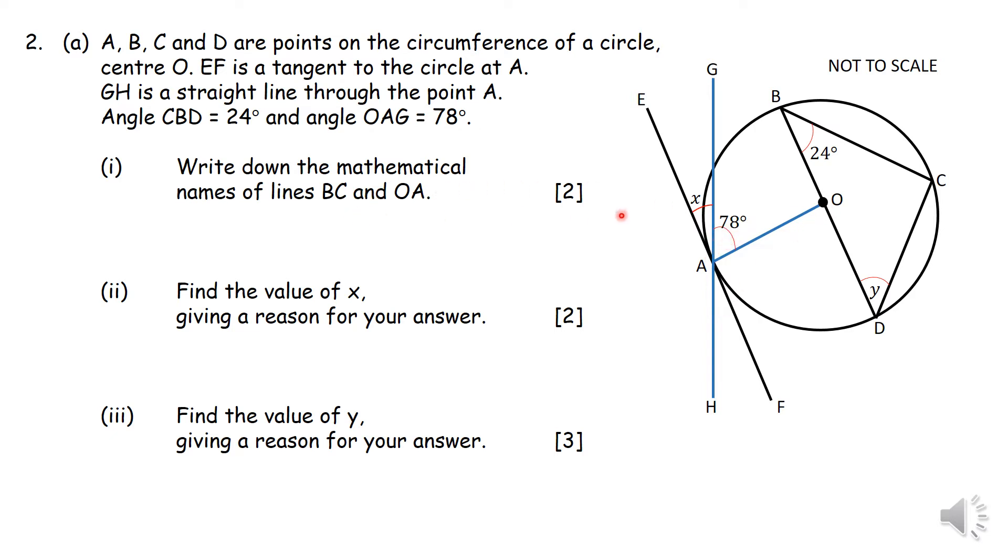Write down the mathematical names of line BC. So when you look at BC, that is a chord. A chord is a line that touches the circle with two ends on the circumference. A diameter is also a chord, it's just special because it passes through the center. So BC is a chord.